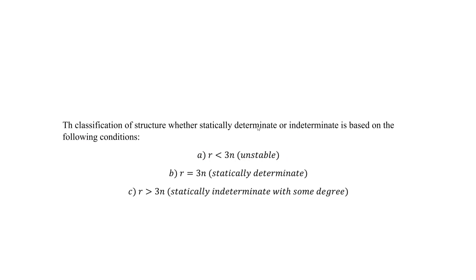A beam is unstable if the number of reactions R is less than 3 times N. The 3 comes from the three possible equilibrium equations: sum of forces in X, sum of forces in Y, and sum of moments. The N value is the number of members. So we find the reactions, find N, multiply by 3, then compare.